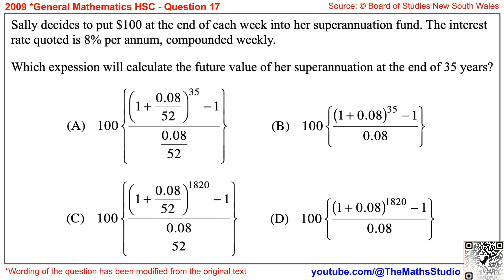Question 17. Note that the wording of the question has been modified from the original text. Sally decides to put $100 at the end of each week into her superannuation fund. The interest rate quoted is 8% per annum, compounded weekly. Which expression will calculate the future value of her superannuation at the end of 35 years?